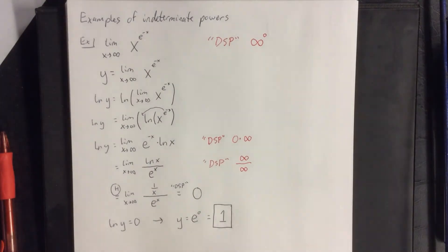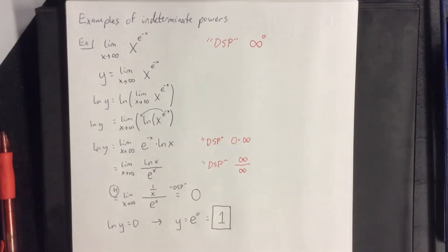That is our final answer — boxed. So as it turns out, when you raise infinity to the 0 power, sometimes that can be 1.